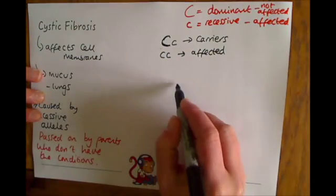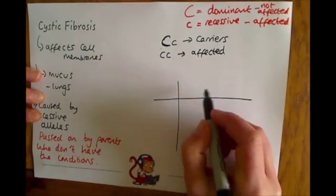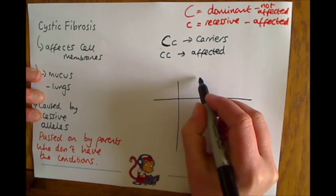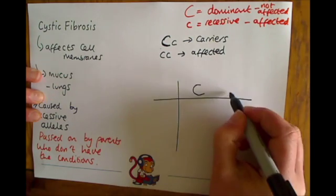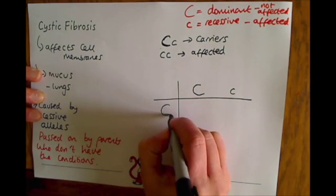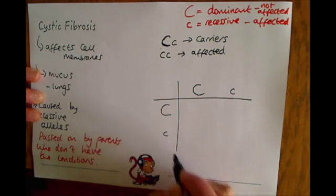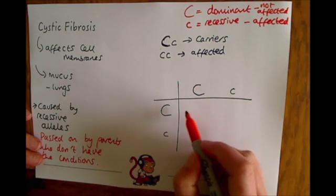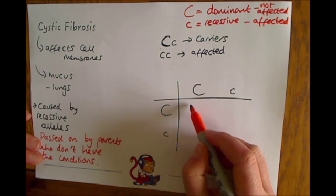If we have a look at that in terms of a genetic cross, both parents are carriers. We'll put one parent up here with a big C and a lowercase c, and another parent here with a big C and a lowercase c. If those parents went on to have offspring, you'd have the following combination of alleles.